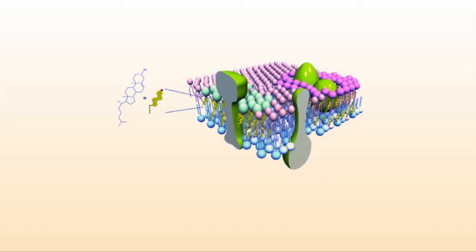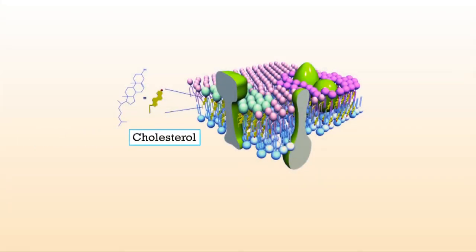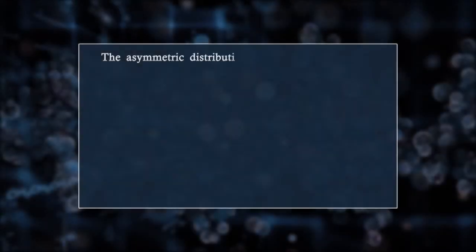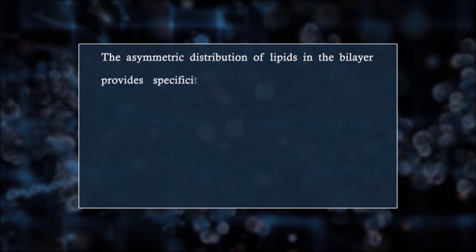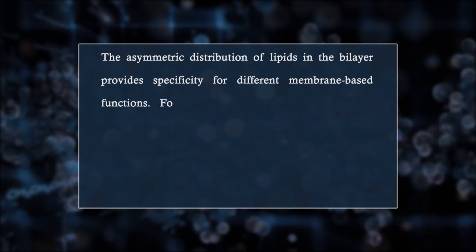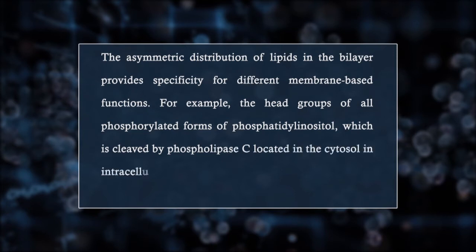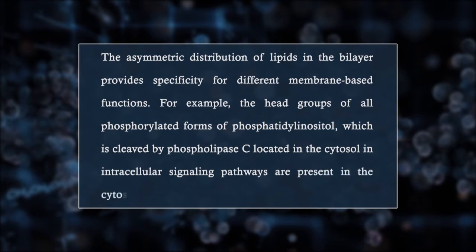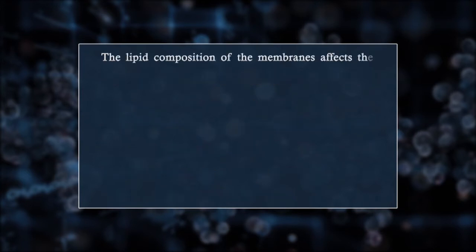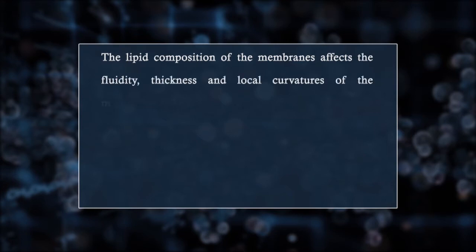Such segregation of lipids with different fluidity in the bilayer may influence the curvature of the membrane. However, unlike phospholipids, cholesterol is relatively evenly distributed in both leaflets of cellular membranes. The asymmetric distribution of lipids in the bilayer provides specificity for different membrane-based functions. For example, the head groups of all phosphorylated forms of phosphatidylinositol — which is cleaved by phospholipase C located in the cytosol — in intracellular signaling pathways are present in the cytosolic leaflet of the plasma membrane. The lipid composition of the membranes affects the fluidity, thickness, and local curvatures of the membrane.